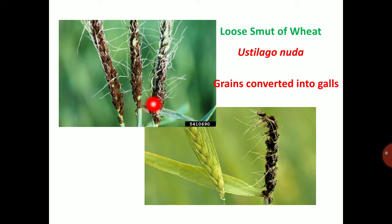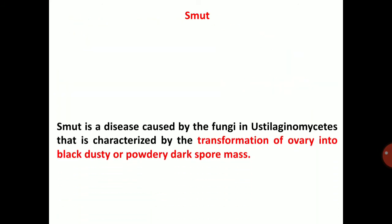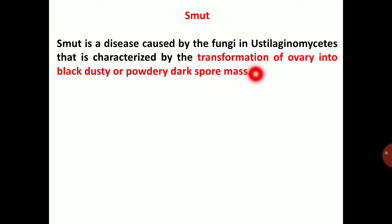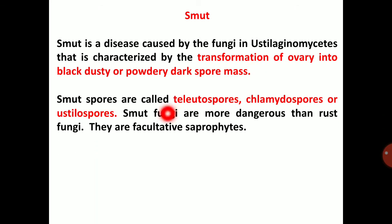This is severely infected wheat grains by smut spores. Smut is a disease caused by the fungi in Ustilaginomycetes that is characterized by the transformation of ovary into black dusty or powdery dark spore mass. So the ovary is converted into black dusty spores. Smut spores are called teliospores, chlamydospores, or ustilospores — there are three names.